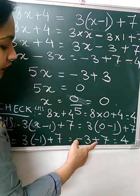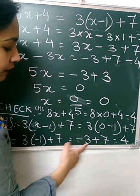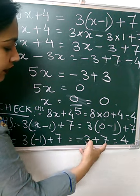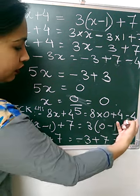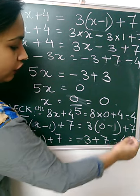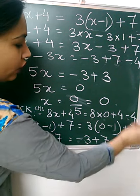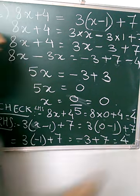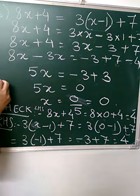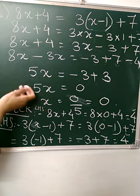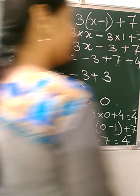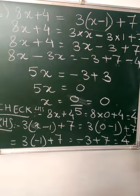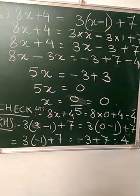The sign will be of the bigger number. Who is greater? 7 is greater, so plus. Now you can see your LHS and your RHS are equal. So we write LHS is equal to RHS. Hence verified that our answer is correct.